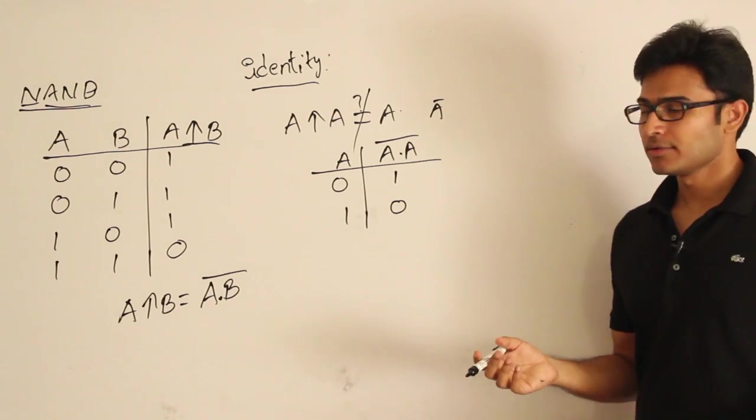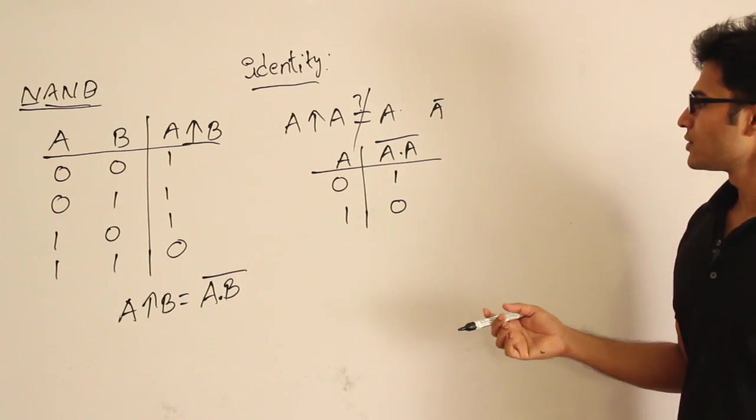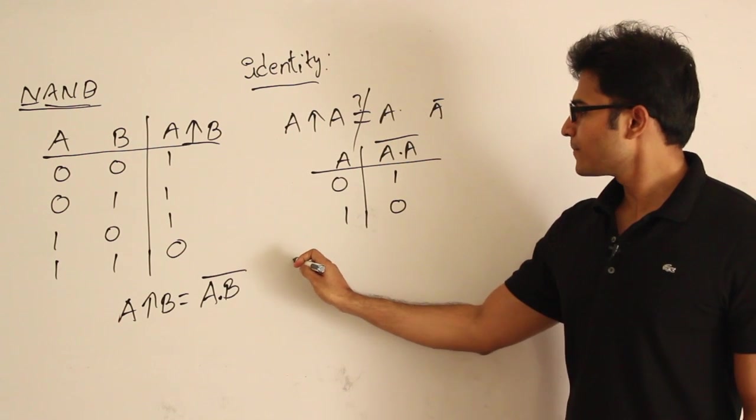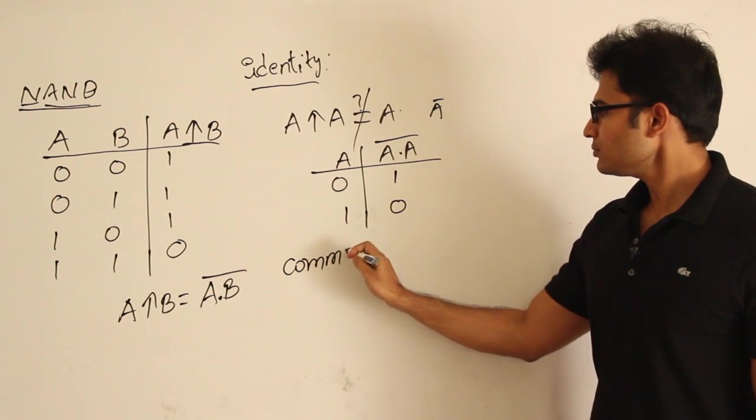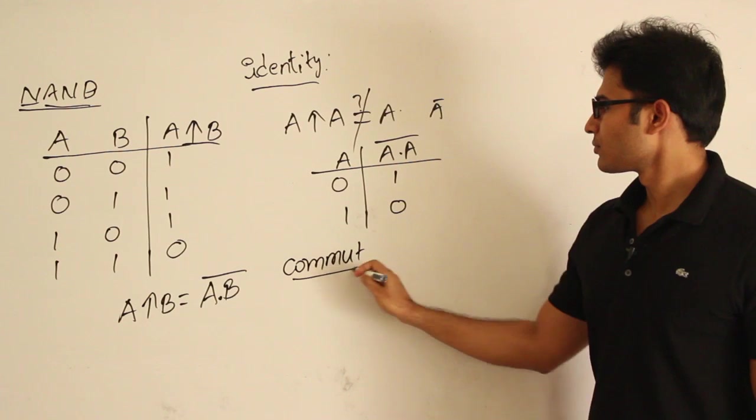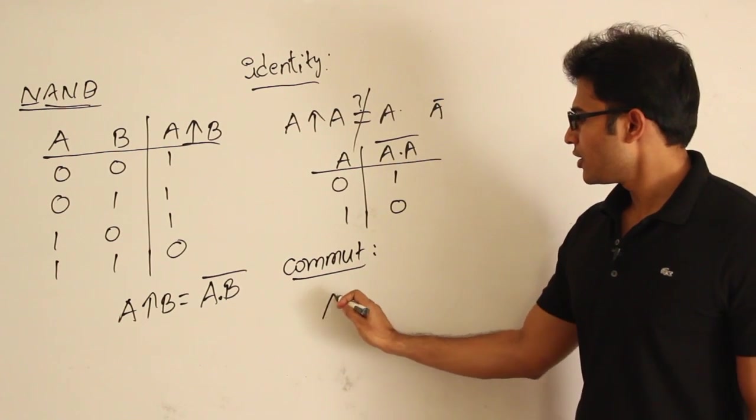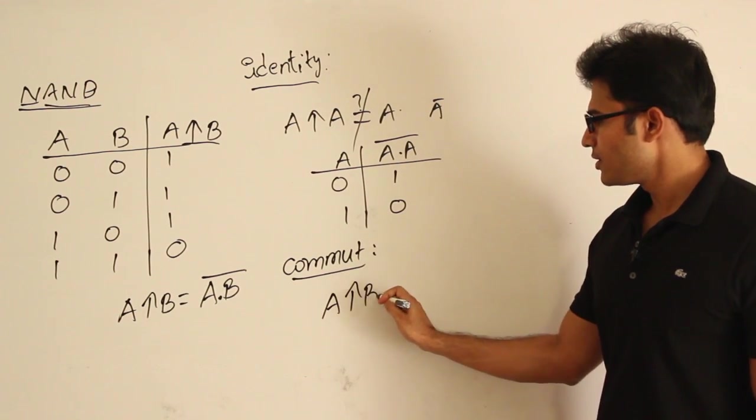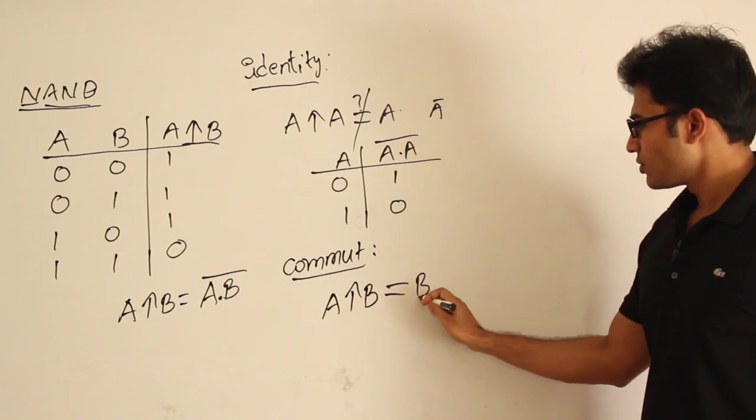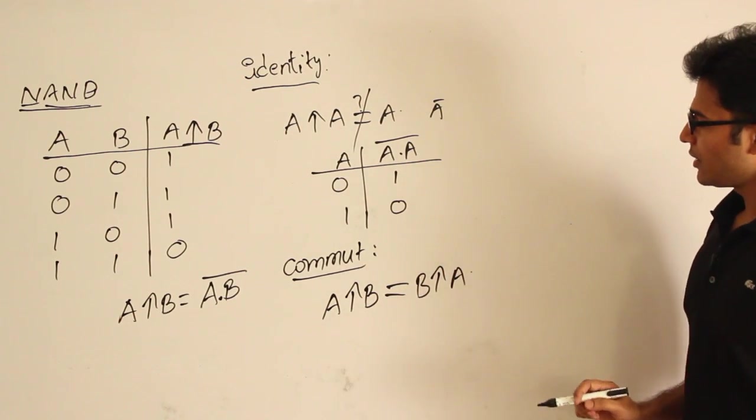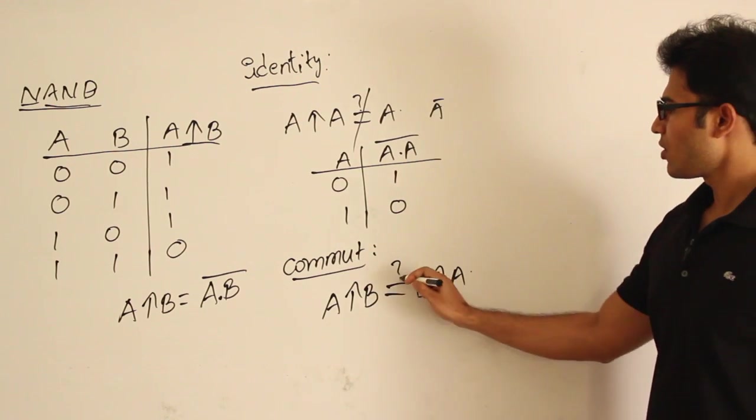Now let's see whether it follows the commutative rule or not. Is A NAND B equal to B NAND A? Let's see this.